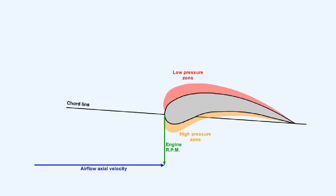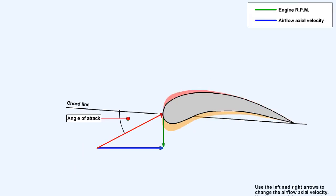Let's examine the phenomenon called stall more closely. The angle of attack of a compressor blade is the result of the axial velocity of the air passing across it and the rotational speed of the blade. The forces of the air's axial velocity and the engine RPM combine to form a vector which allows us to find the actual angle of attack of the airflow over the blade. So a compressor stall can be caused by an imbalance between the rotational speed of the blade and the axial velocity of the air passing across it, which can occur for various reasons, some of which we'll now examine.